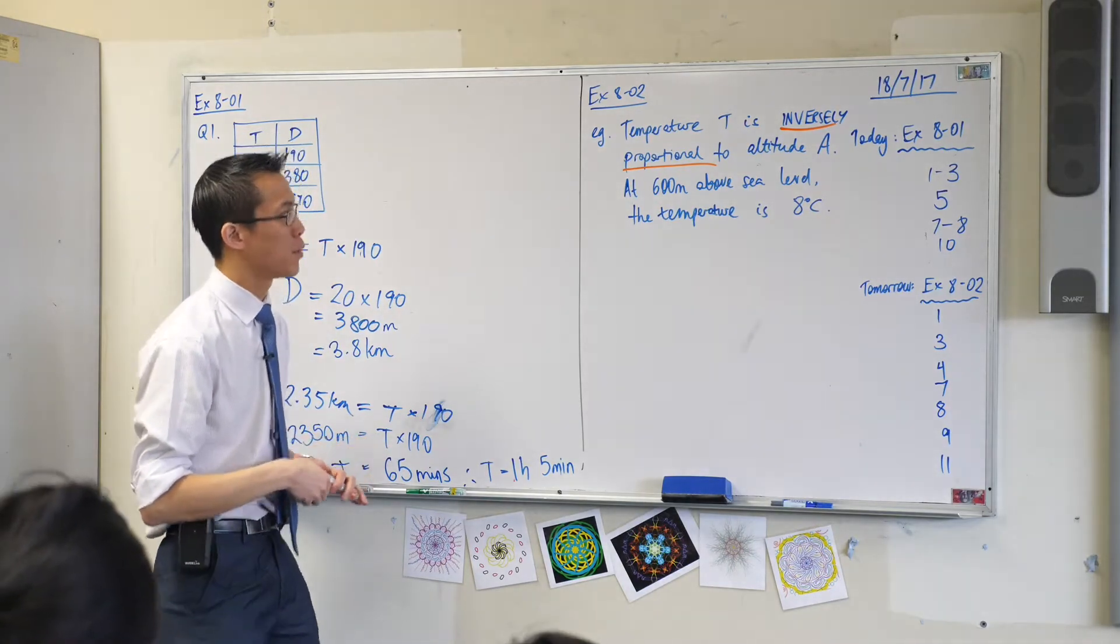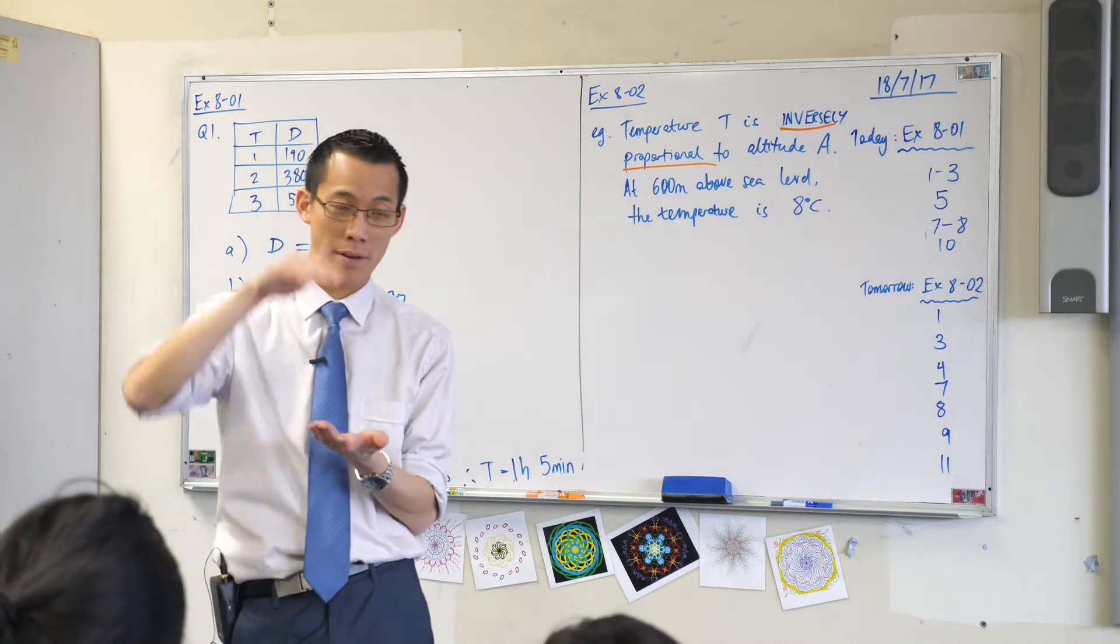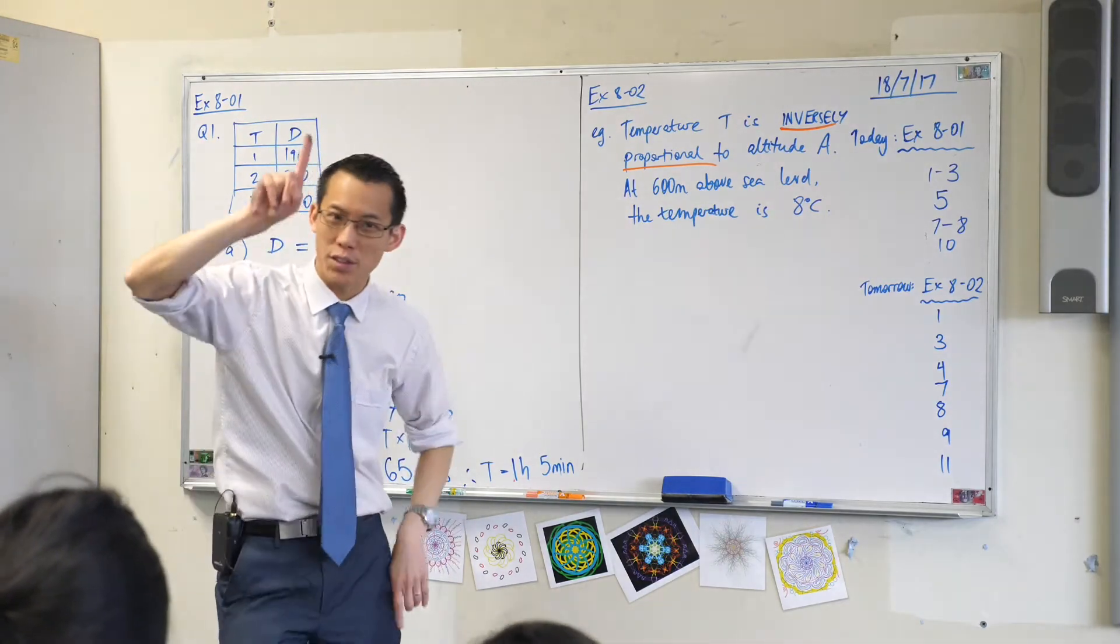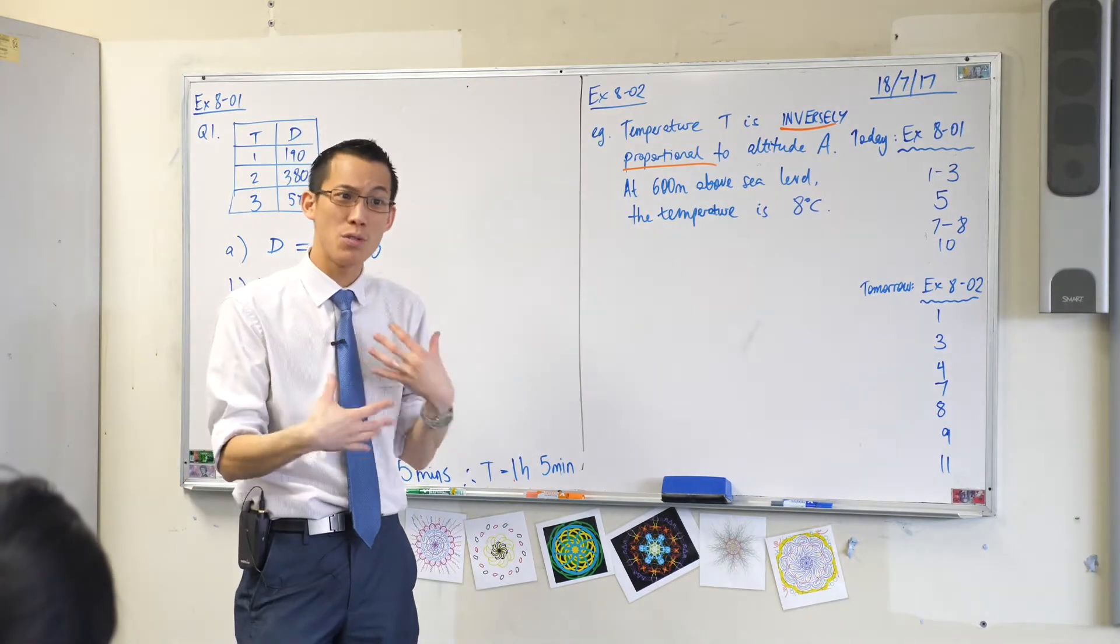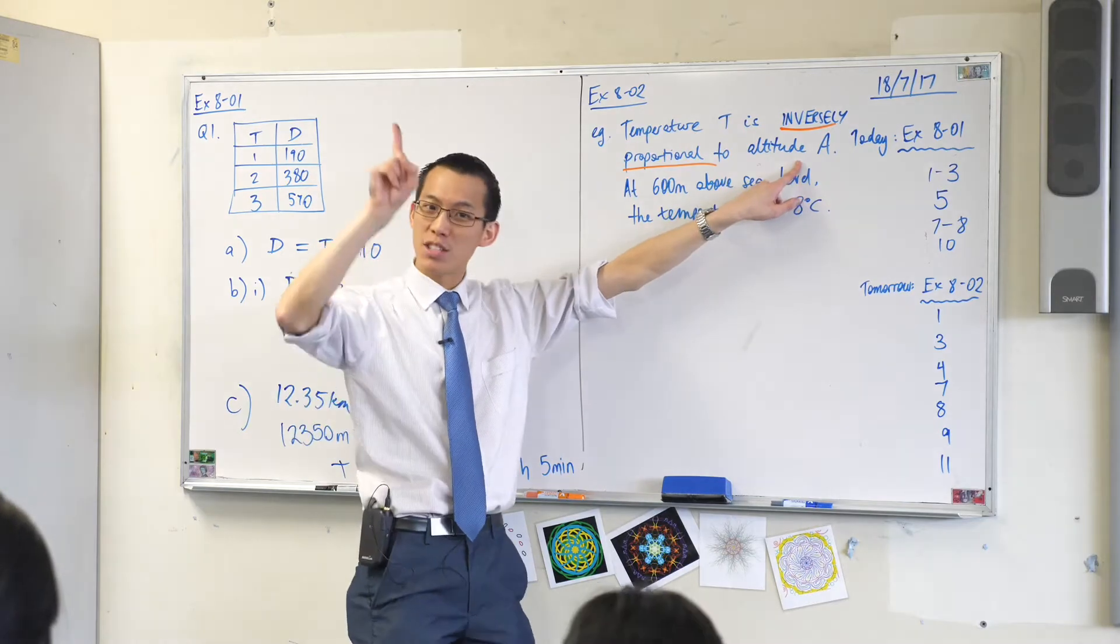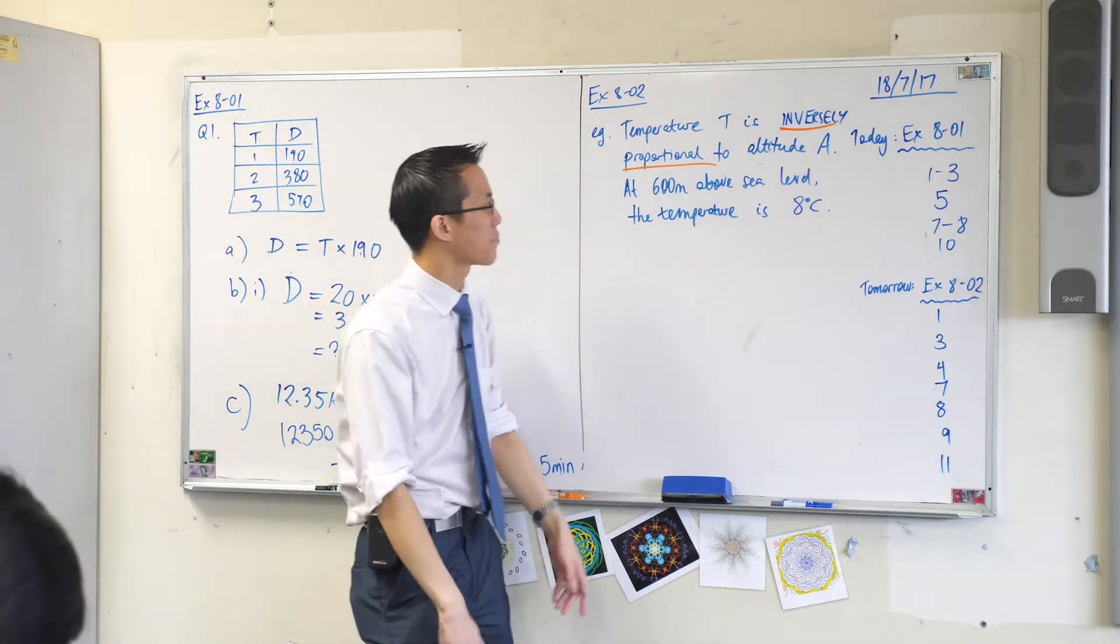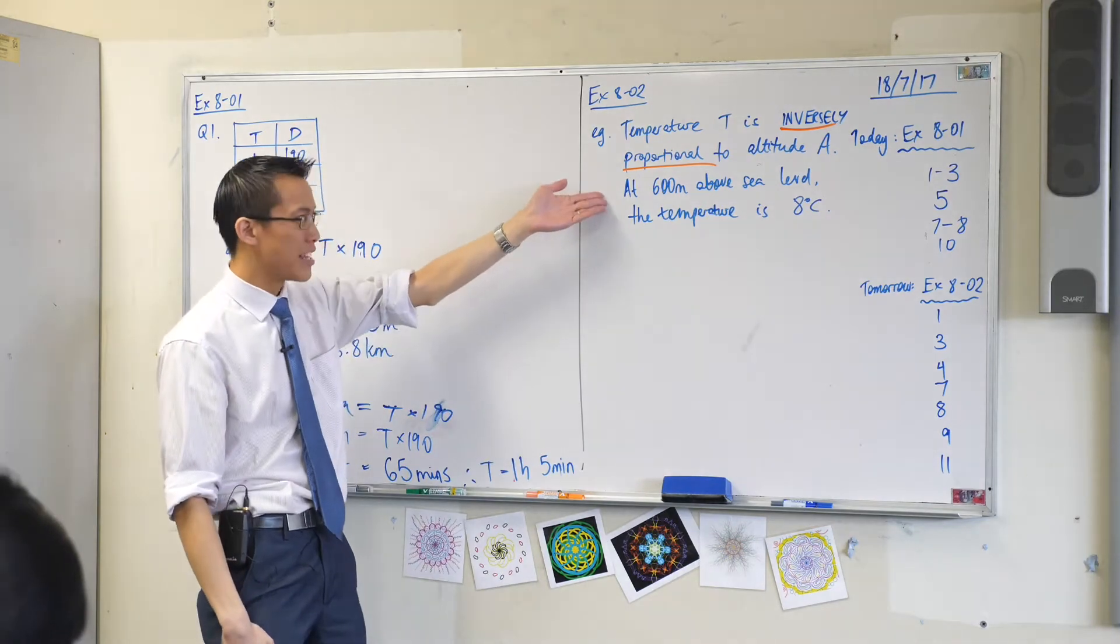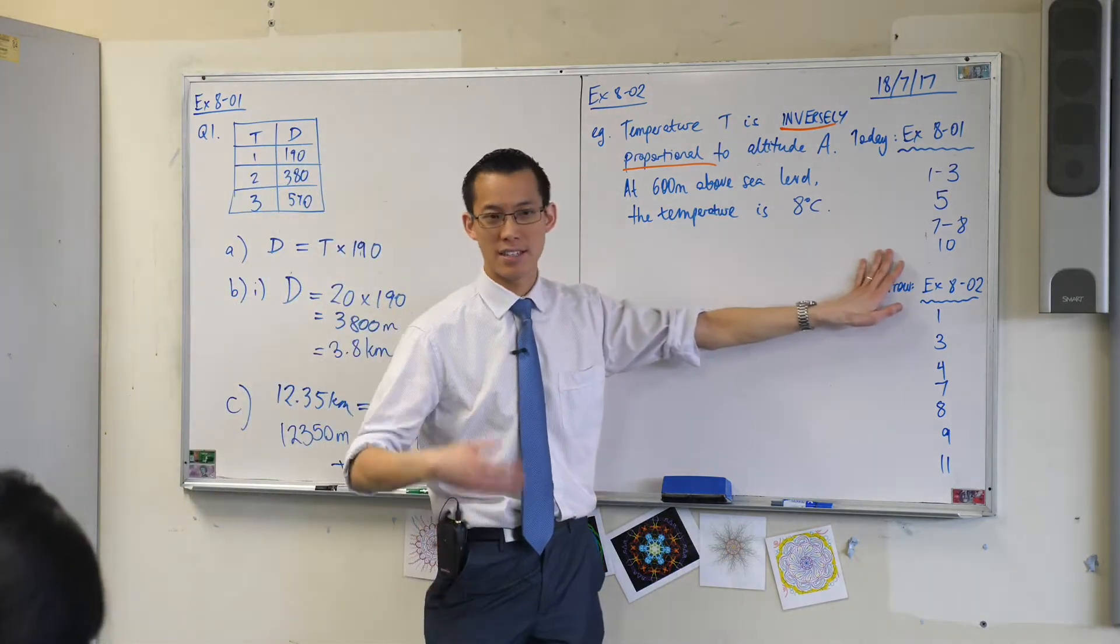Temperature is inversely proportional to altitude. Now that makes sense, right? Altitude is how far you are above sea level. As you go further and further away, the earth is warm, right? So the closer you are to the earth, the warmer you are. You get further and further away, your altitude increases, it gets colder until eventually, you know, you're in space.